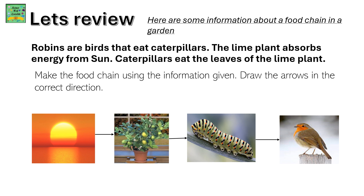By now you must be familiar with how to draw food chains, so here's a question to test your knowledge. Robins are birds that eat caterpillars. The lime plant absorbs energy from the sun. Caterpillars eat the leaves of the lime plant. Now make the food chain using the given information and draw the diagrams in the correct direction. Your main objective is to find out which are the producers and consumers.